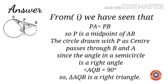From part 1, we have seen that PA equal to PB, so P is the midpoint of AB. The circle drawn with P as center passes through B and A. Since the angle in a semicircle is a right angle, therefore angle AQB equal to 90 degrees. So triangle AQB is a right triangle.